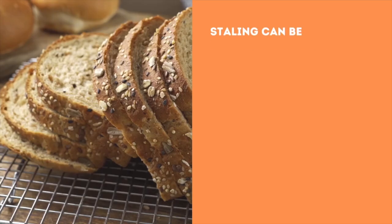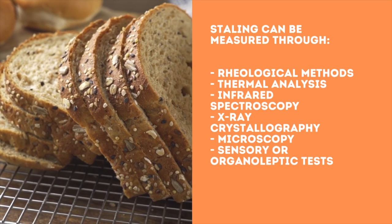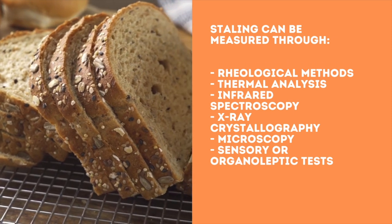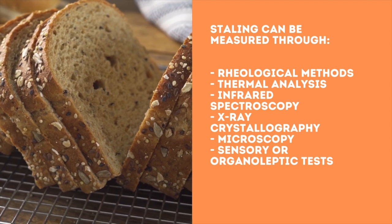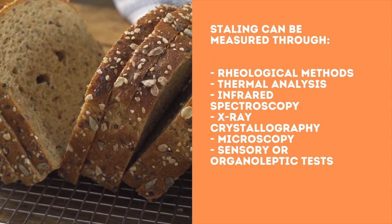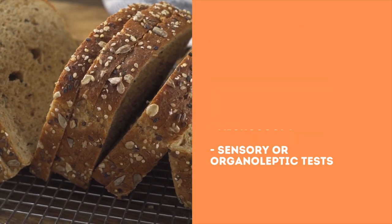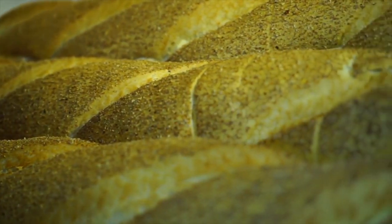How to measure staling: staling can be measured through rheological methods, thermal analysis, infrared spectroscopy, X-ray crystallography, microscopy, and sensory or organoleptic tests. A more effective approach to reduce crumb firming and to maintain crumb elasticity over time is the use of amylases.